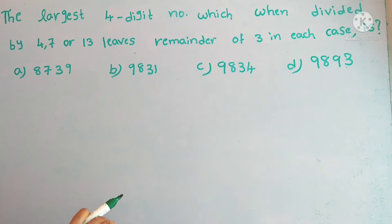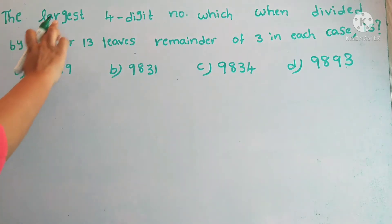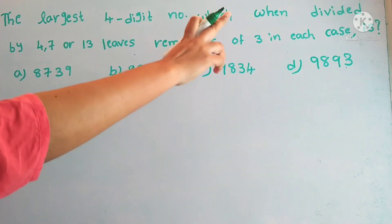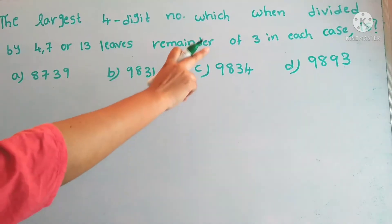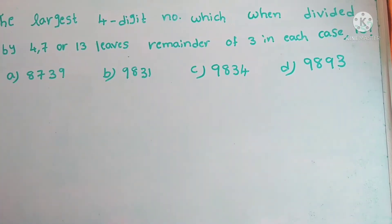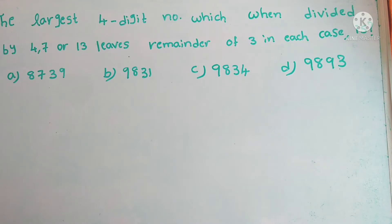Hi, today's video I am going to explain one of the important questions in the HCF and LCM concept. The question is: the largest four digit number which when divided by 4, 7 or 13 leaves remainder of 3 in each case. The number is?